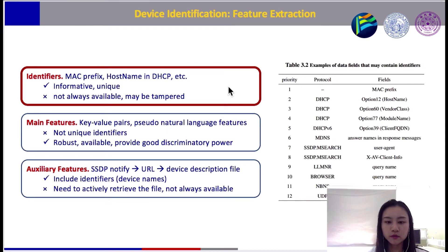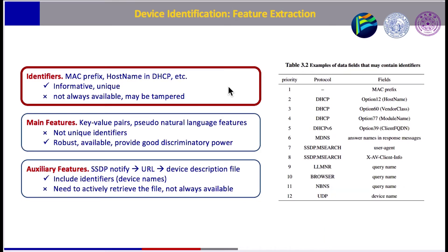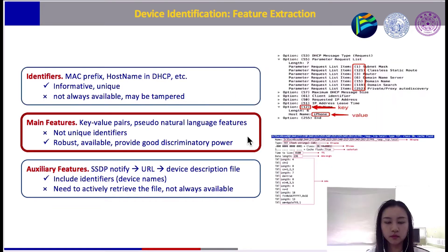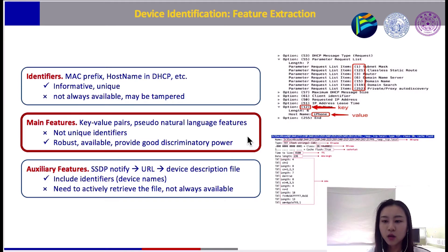We extracted three types of features from the data. The first is identifiers, such as MAC prefix and the hostname attribute from DHCP packets. They carry a significant amount of information that may help with device identification; however, they are not always available (except the MAC prefix), and some could be easily tampered with by anyone who knows the OS. Our main features are key-value pairs and pseudo-literal language features extracted from the content of broadcast and multicast packets. They are almost always available and relatively reliable — it is actually not easy to tamper with those numeric codes without being noticed. Our model will show that these features provide abundant information for device identification.